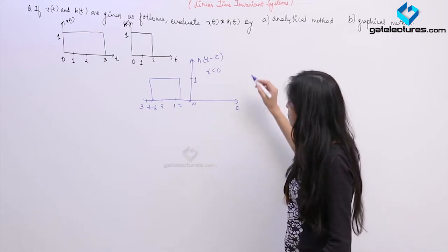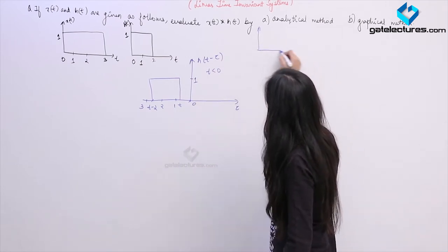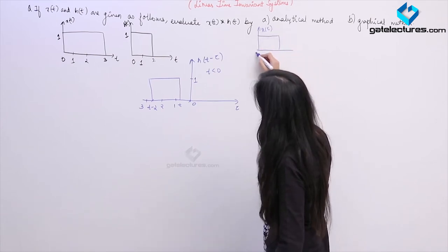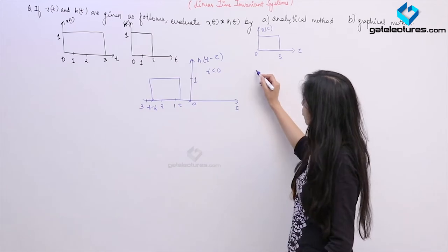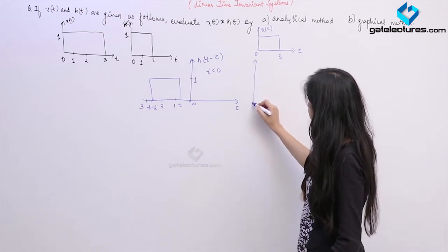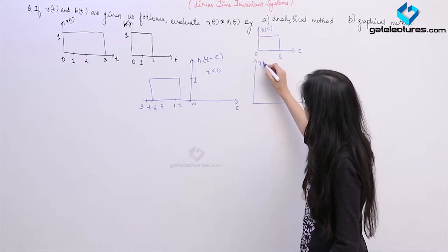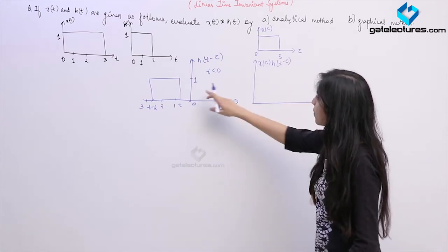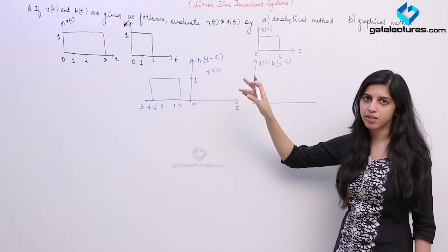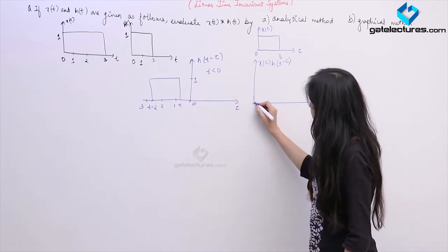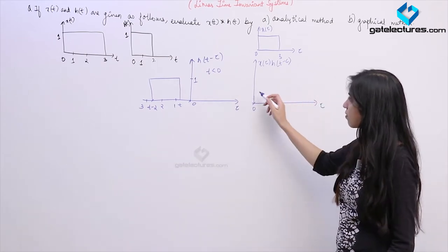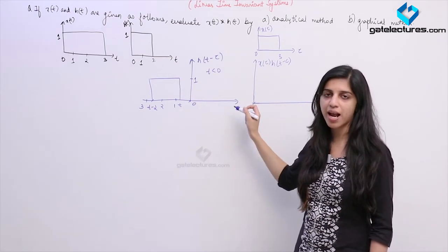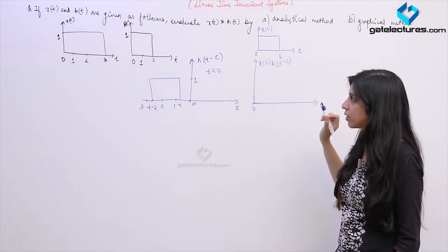This is how this pulse looks like. Now, x(τ) occurs from 0 to 3. If I try to sketch the intersection — that is x(τ)·h(t−τ) — these two pulses are having no intersection, no area in common. So we are going to have value 0. For t less than 0 we are having value 0 only.